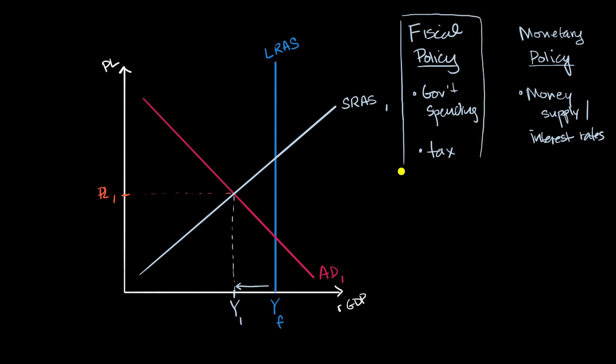So as a government, what we want to see happen is this aggregate demand curve shift to the right. We want our aggregate demand curve to shift to the right, just like this. So this would be aggregate demand two. And how do we do that? How do we get this shift right over here so that we get to our full employment output?